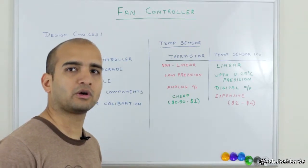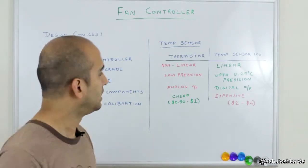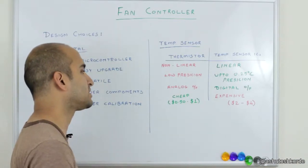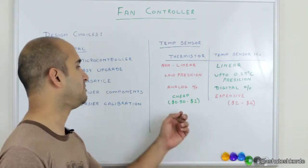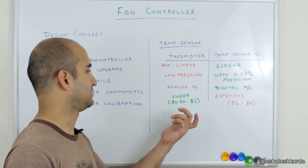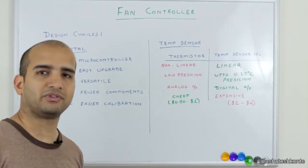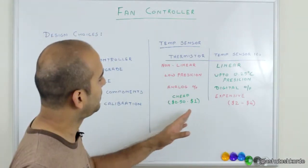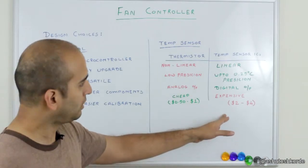The major advantage of a thermistor though is it's extremely cheap. You get like one thermistor for about 50 cents to a dollar. The temperature sensors on the other hand, which are specialized ICs,